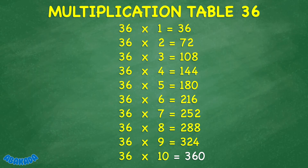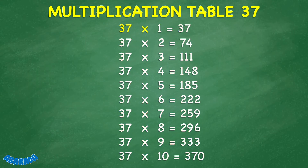36 times 10 equals 360. 37 times 1 equals 37. 37 times 2 equals 74. 37 times 3 equals 111. 37 times 4 equals 148. 37 times 5 equals 185. 37 times 6 equals 222.